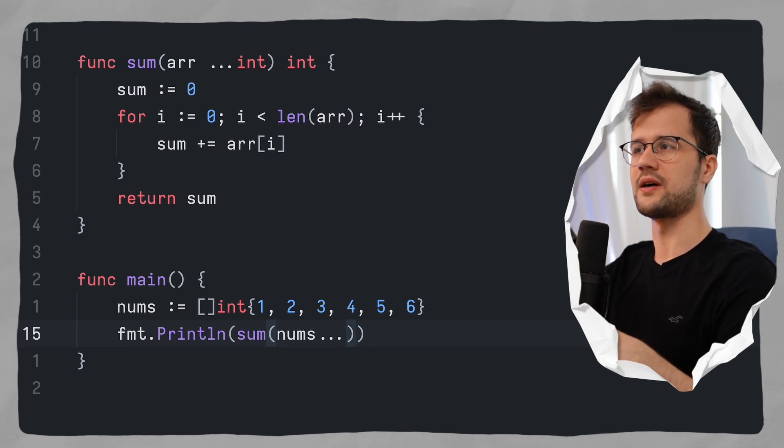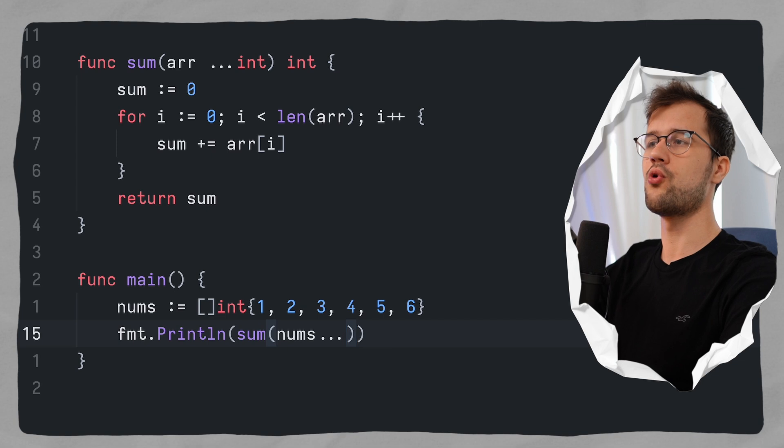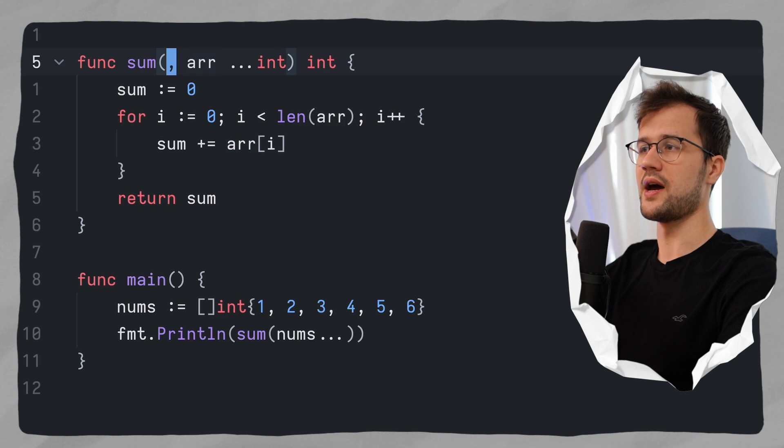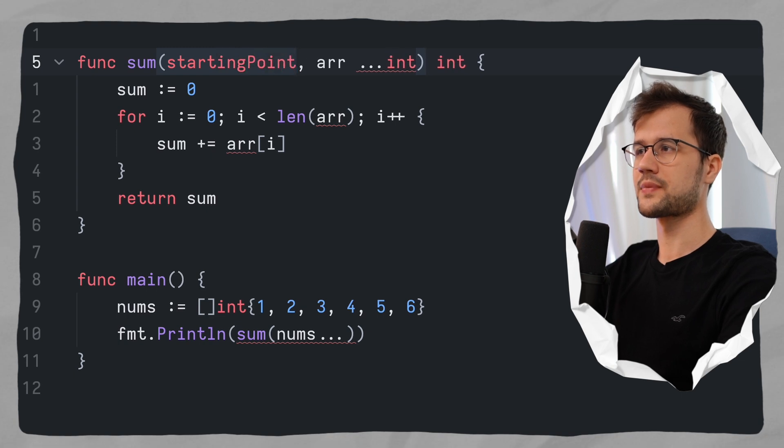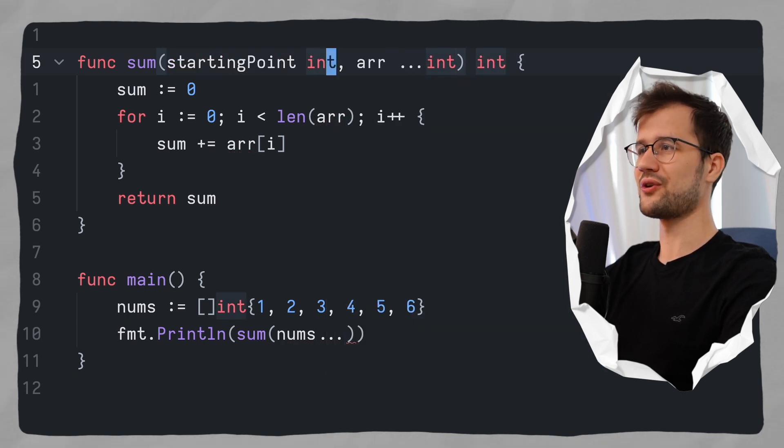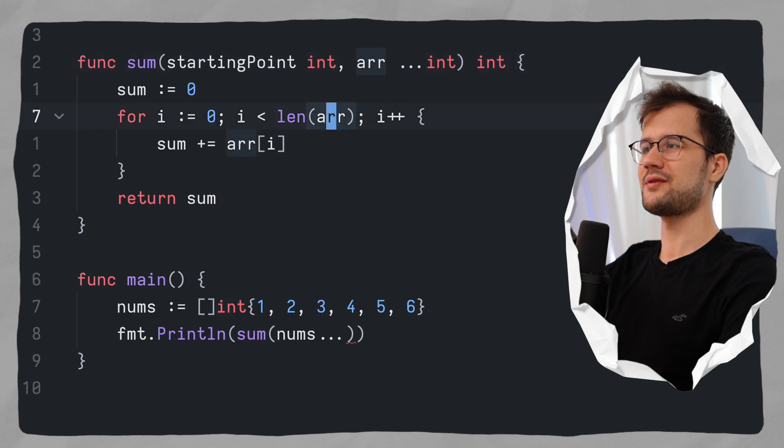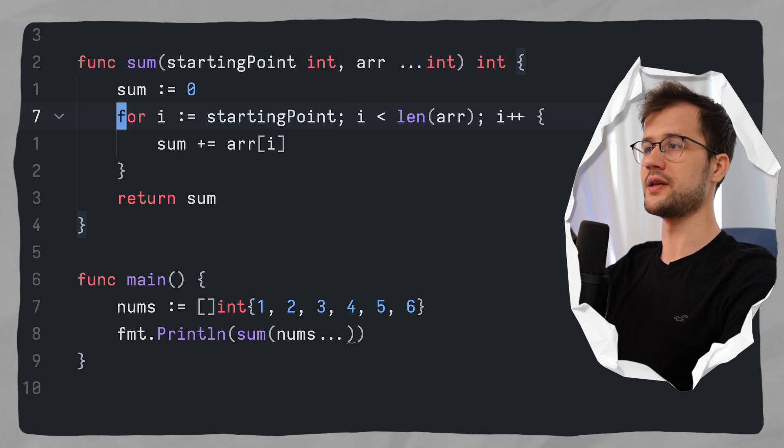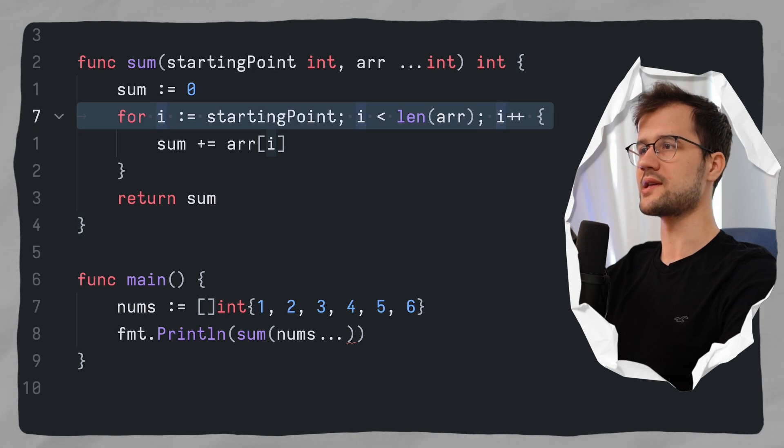But coming back to variadic functions, obviously we can define more arguments in our function here. For instance, we can say that the first argument could be a starting point, and this starting point can be also an integer. So now we got our starting point and let's just make use of that and say starting point for the initialization of our index i here.